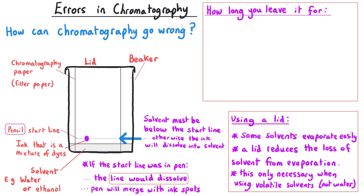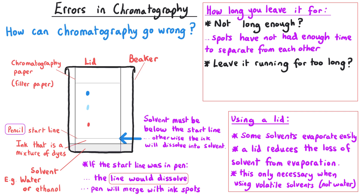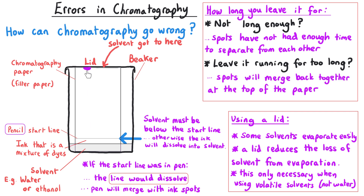The final type of error is to do with how long you leave the experiment running. We need to leave it running long enough for the solvent to have risen far enough up the paper to allow the spots to travel different distances — we're trying to get the spots to race up the paper. If we don't leave it long enough the spots won't have separated. But the opposite is also a problem: if the solvent travels all the way to the top and you leave it running, all the samples will eventually reach the top and merge back together again, so you won't be able to identify them.